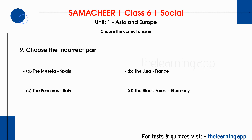Question 9: Choose the incorrect pair. Options are: A. the Meseta — Spain, B. the Jura — France, C. the Pennines — Italy, D. the Black Forest — Germany. Correct answer is C, the Pennines — Italy.